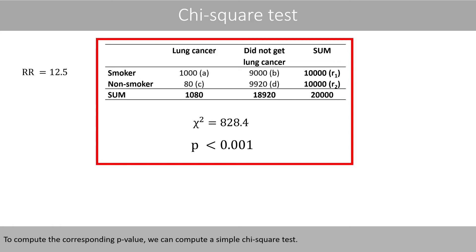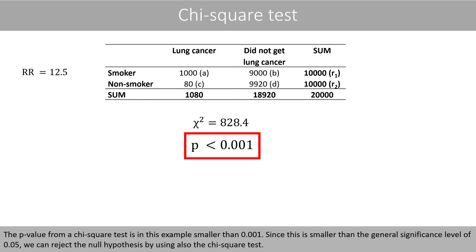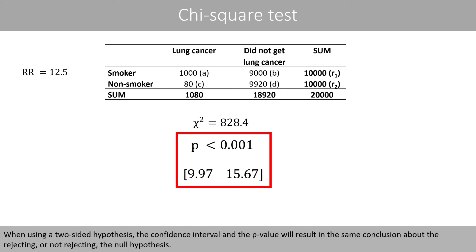To compute the corresponding p-value, we can compute a simple chi-square test. The p-value from a chi-square test is in this example smaller than 0.001. Since this is smaller than the general significance level of 0.05, we can reject the null hypothesis by using also the chi-square test. When using a two-sided hypothesis, the confidence interval and the p-value will result in the same conclusion about rejecting or not rejecting the null hypothesis.